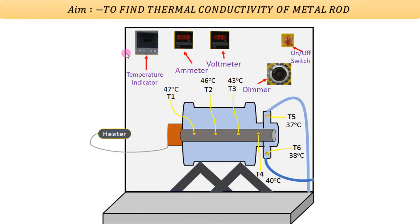The temperature readings are: T1 = 47°C, T2 = 46°C, T3 = 43°C, T4 = 40°C, T5 = 37°C, and T6 = 38°C. You can collect all readings from the temperature indicator by switching the positions using the up and down switch. Along with the temperature data, we have voltage = 71 V and current = 0.33 A after the steady state.